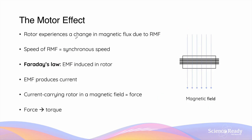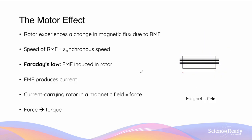When a conductive rotor is placed inside a rotating magnetic field, it experiences changes in magnetic flux. The speed at which the magnetic field is rotating is referred to as the synchronous speed. When the rotor experiences a change in magnetic flux, according to Faraday's law of induction, an EMF — that is, an electromotive force — will be induced in the rotor.